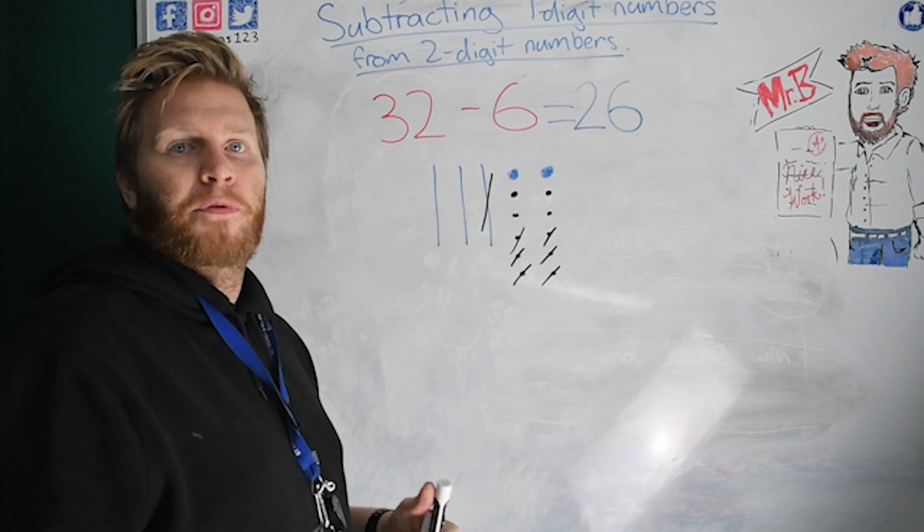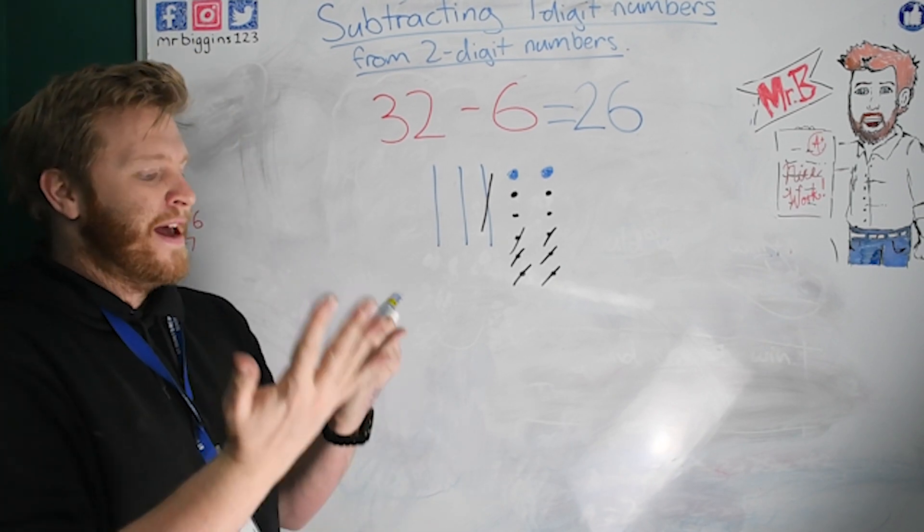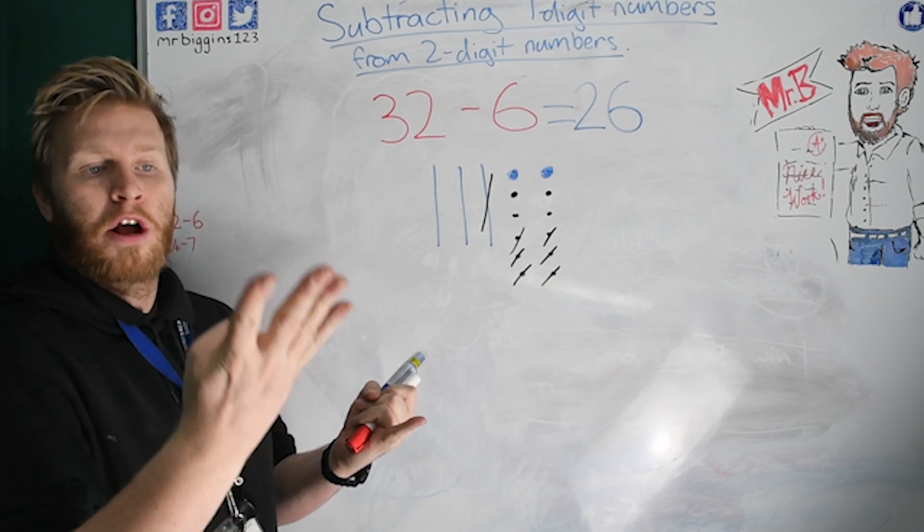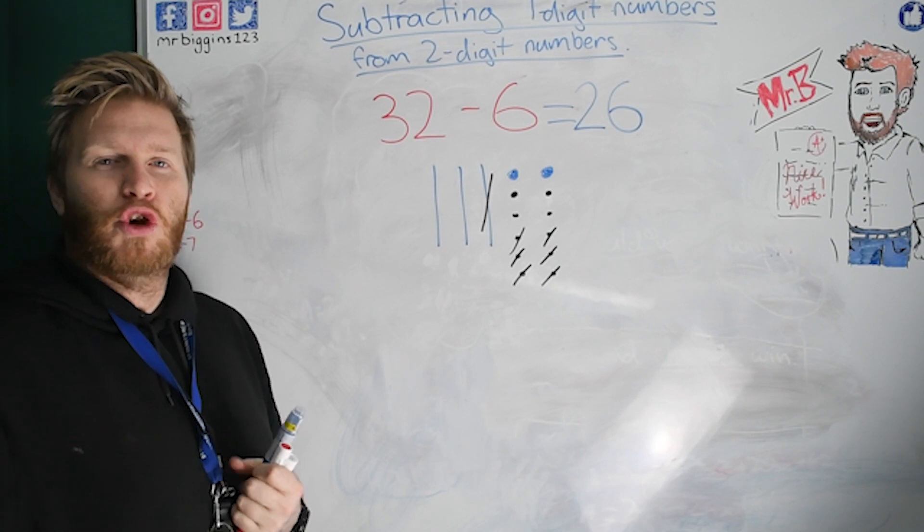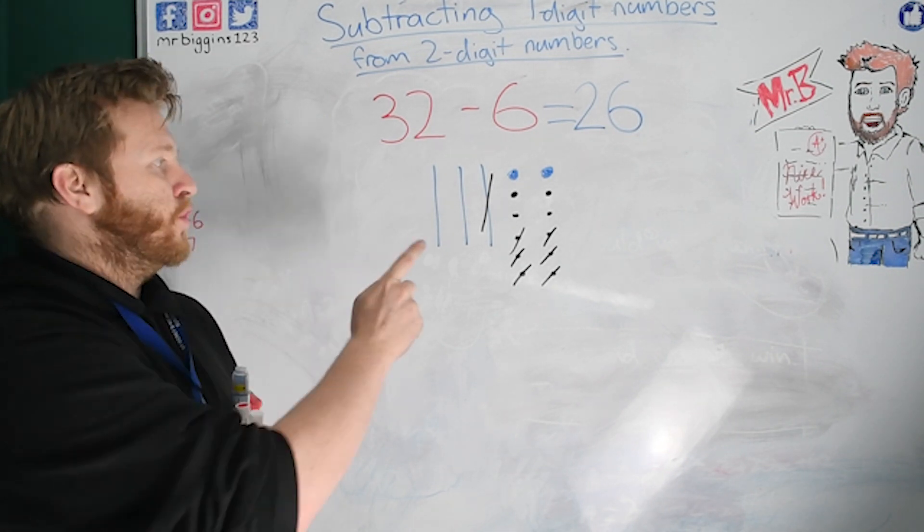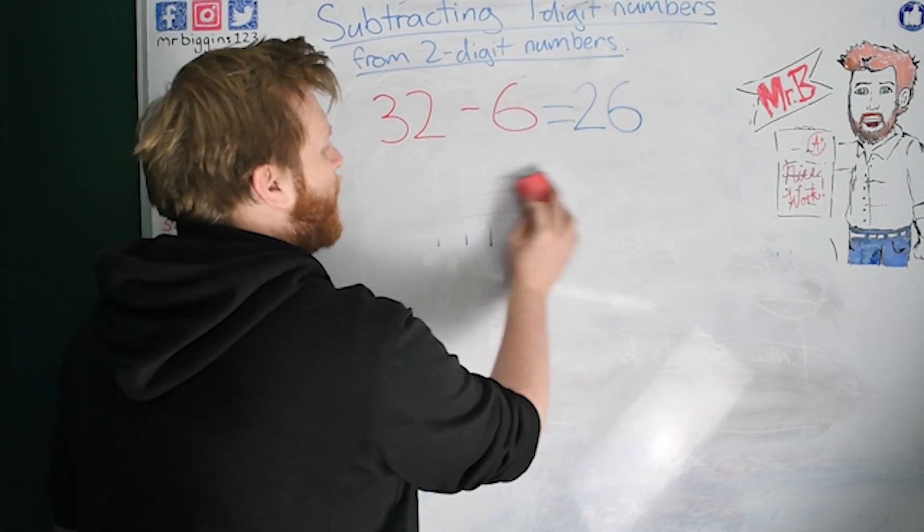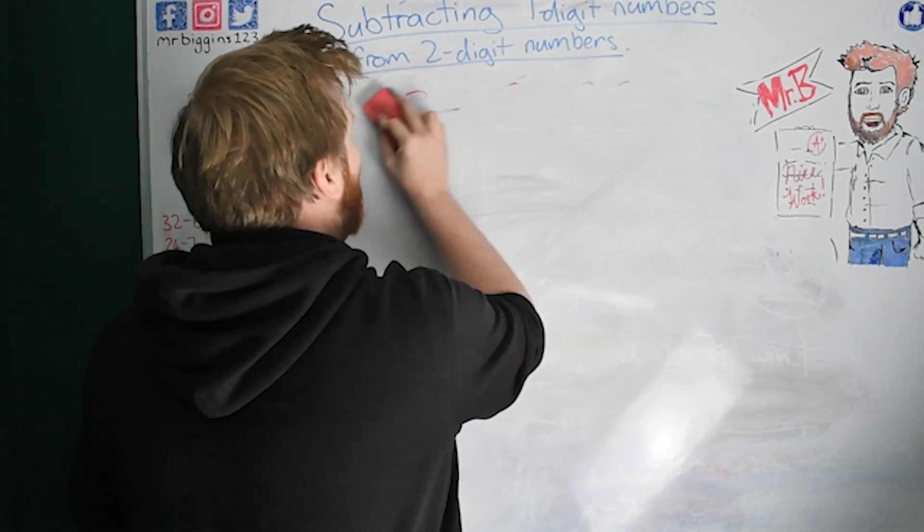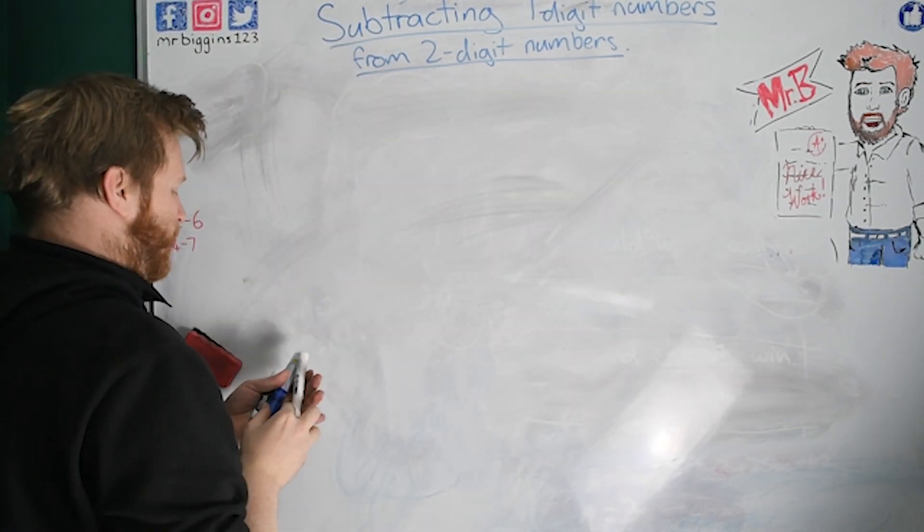Now again, if you're confident counting backwards, that will be a quick method for you. So you can start at thirty-two, get six and go thirty-one, thirty, twenty-nine, twenty-eight, twenty-seven, twenty-six. But you have to be very confident because you're going from your thirties to your twenties. So use this one maybe to check your answer. Right. Well now we've had a little look at how to do it. Let's try one more there where we're going to have to exchange a ten. We're going to have to swap a ten.